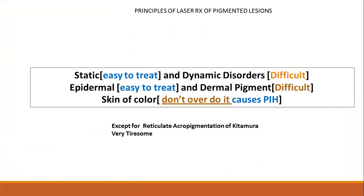I'll give you three principles of laser therapy learned by experience. Number one: static and dynamic disorders. Static disorders are easy to treat — for example, lentigines. Melasma, on the other hand, is dynamic; never expect great results with melasma, but you'll get great results with lentigines. Second: epidermal and dermal disorders. Epidermal disorders are easy to treat and dermal disorders are difficult — like nevus of Ota, ochronosis. The joke is the best OTA results are seen only in conference talks. And most importantly: skin of colour. If you overdo your Nd:YAG lasers, you cause thermal damage and post-inflammatory hyperpigmentation. Applying these three principles, you find that the only condition you can treat sufficiently well is Kitamura.